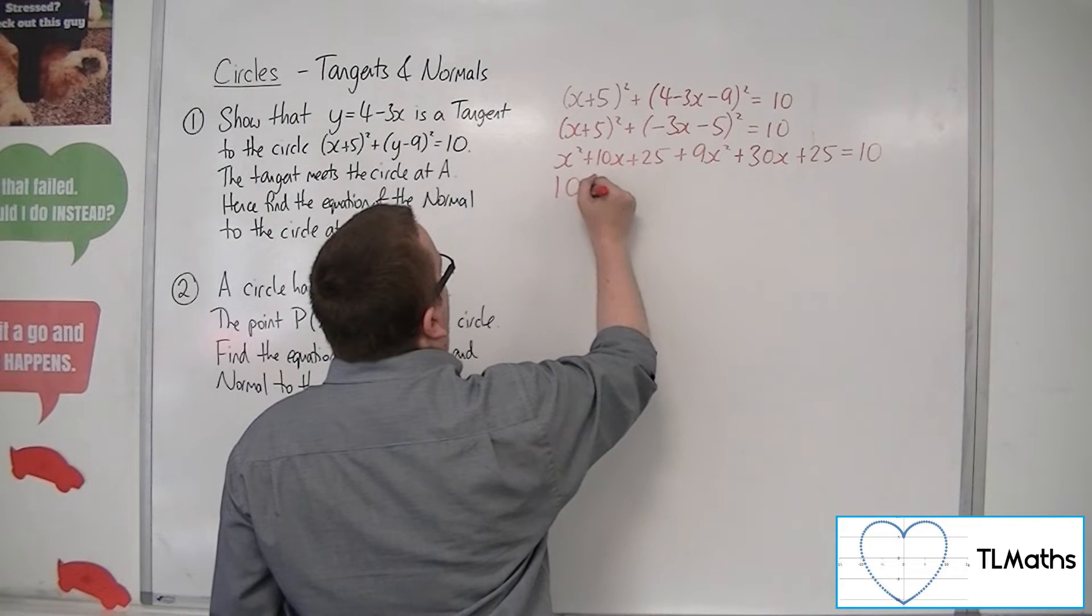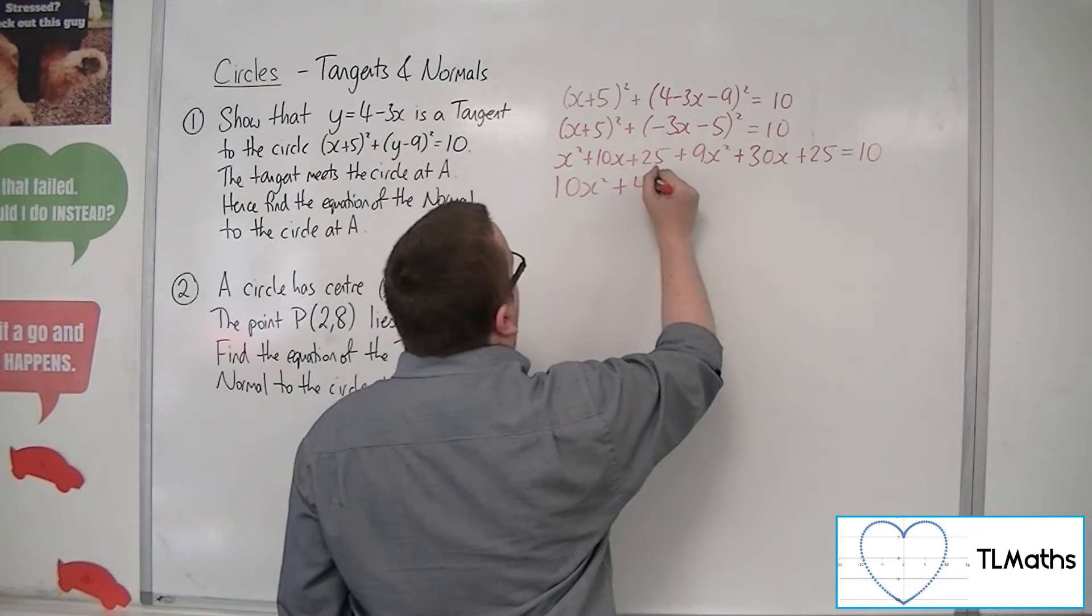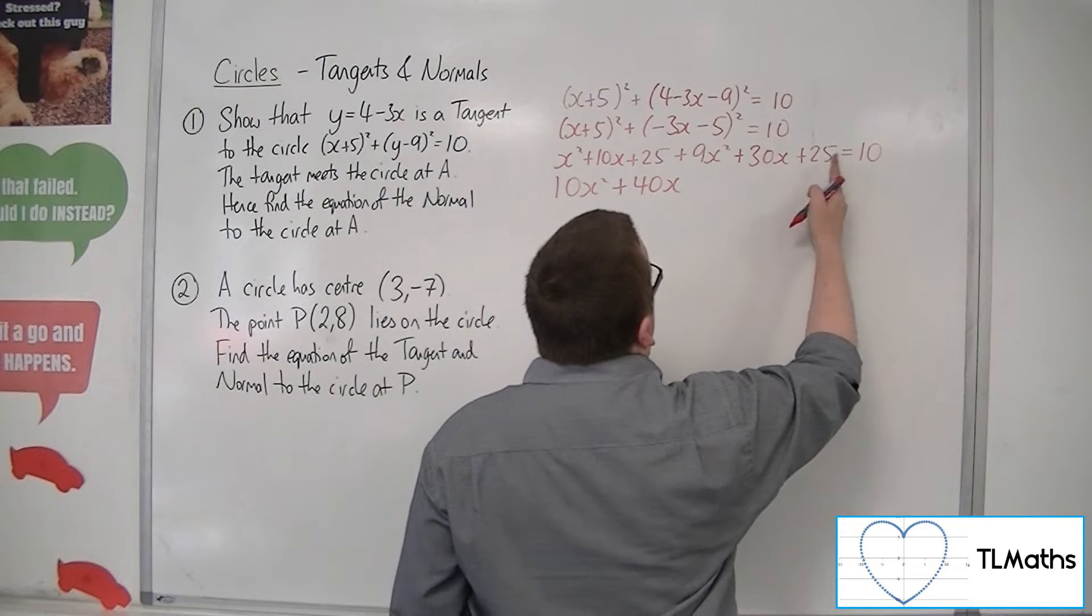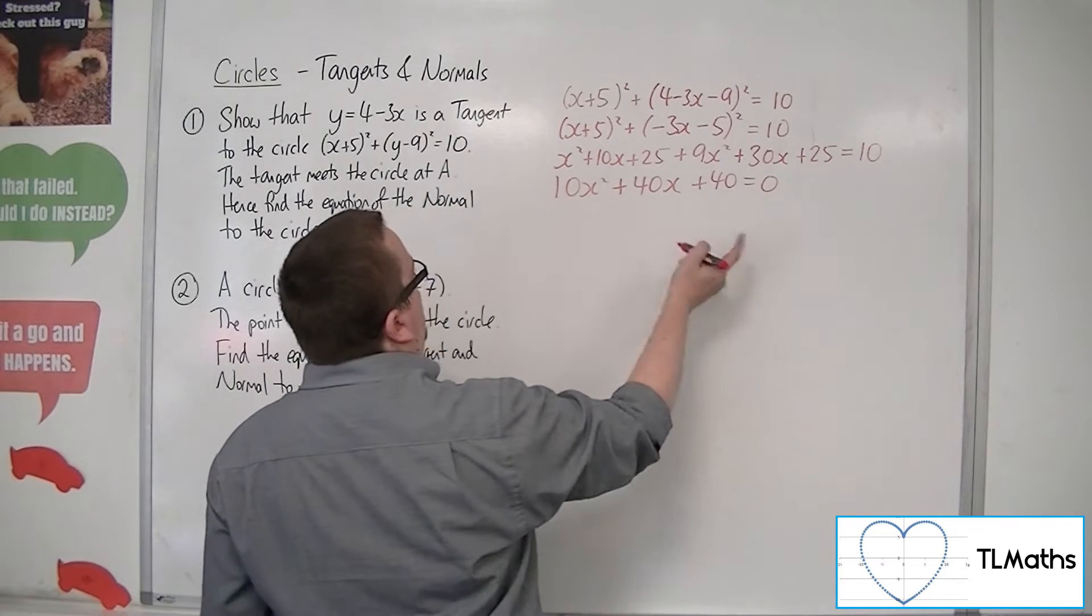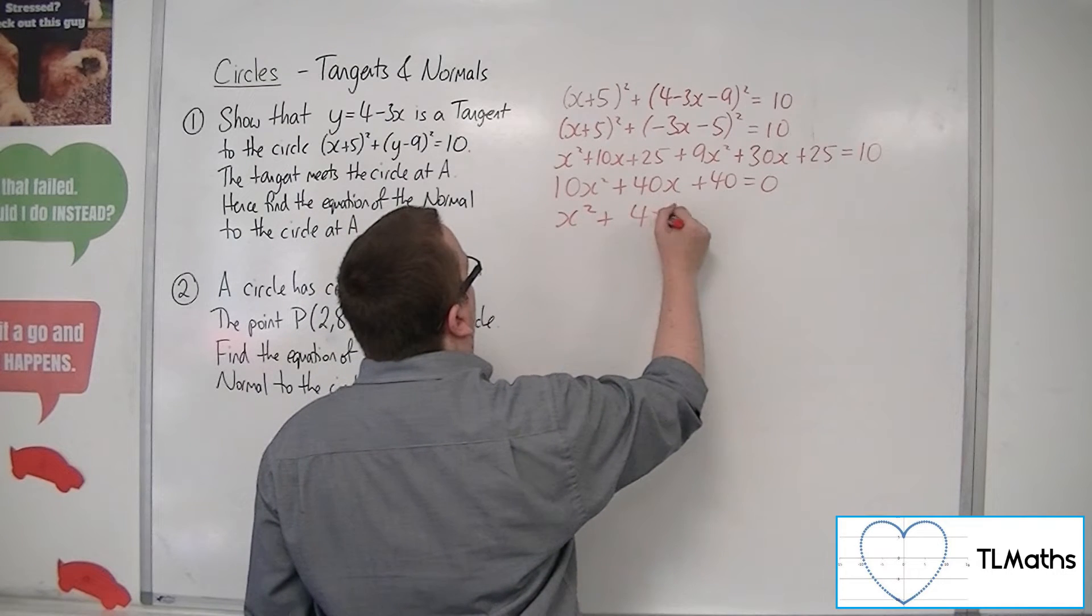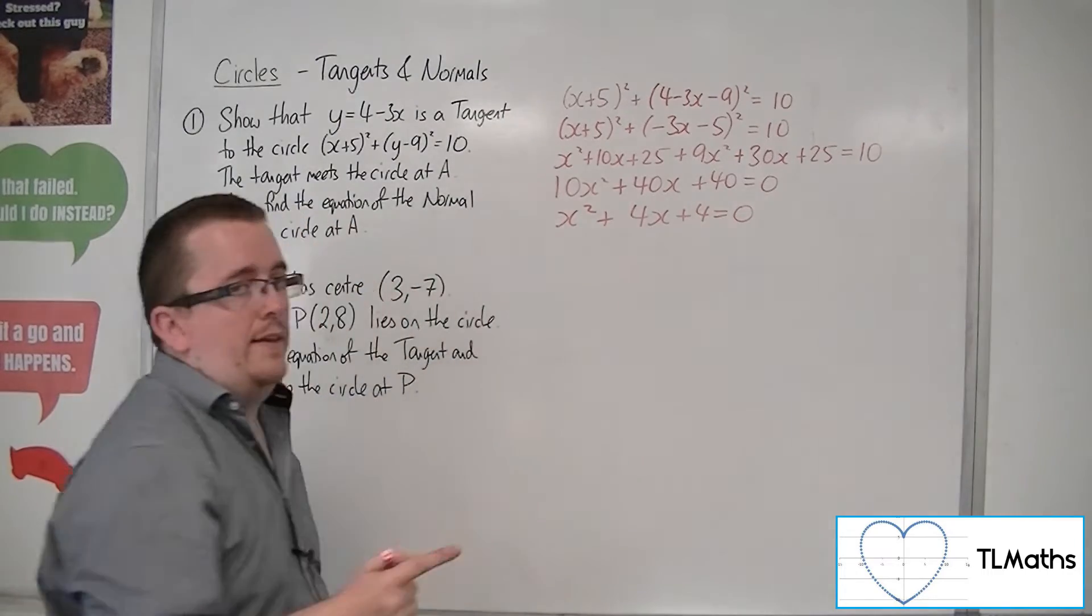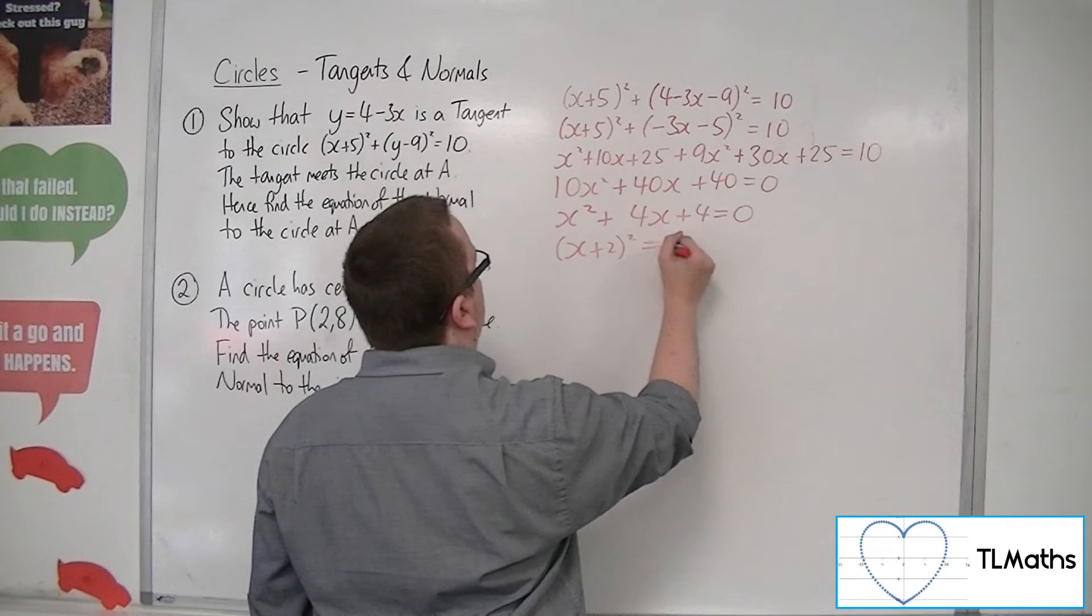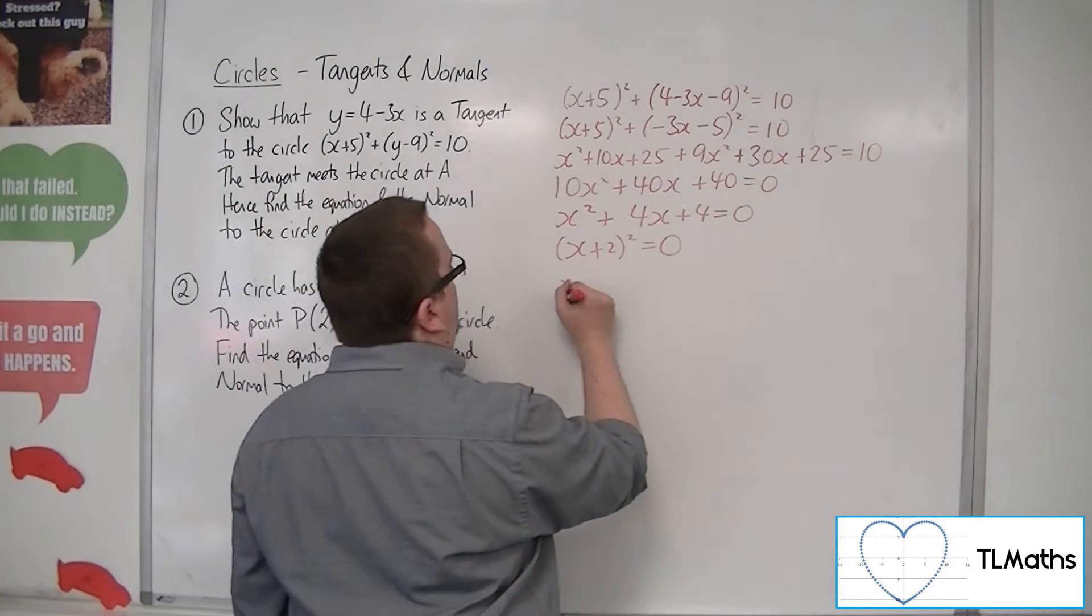So 10x squared, 10x plus 30x, so 40x. 25 plus 25 is 50. Take away the 10 from both sides, so plus 40.